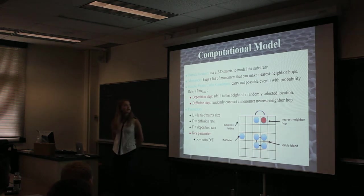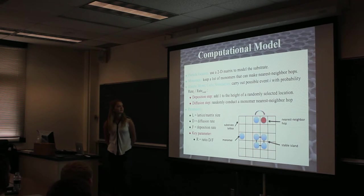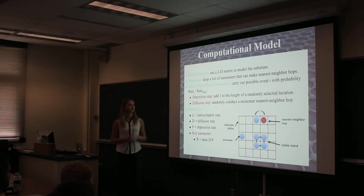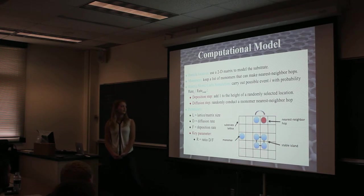So the computational model I'm working on, I made a model in C code using a 2D matrix to model the substrate and the location of the particles. We also keep a list of monomers that can make nearest neighbor hops, and in more complicated models this might be multiple lists that have different types of monomers. I'm running kinetic Monte Carlo simulations, in which the two possible events are carried out with the probability of their rate divided by the total rate, with the two events being deposition and diffusion.